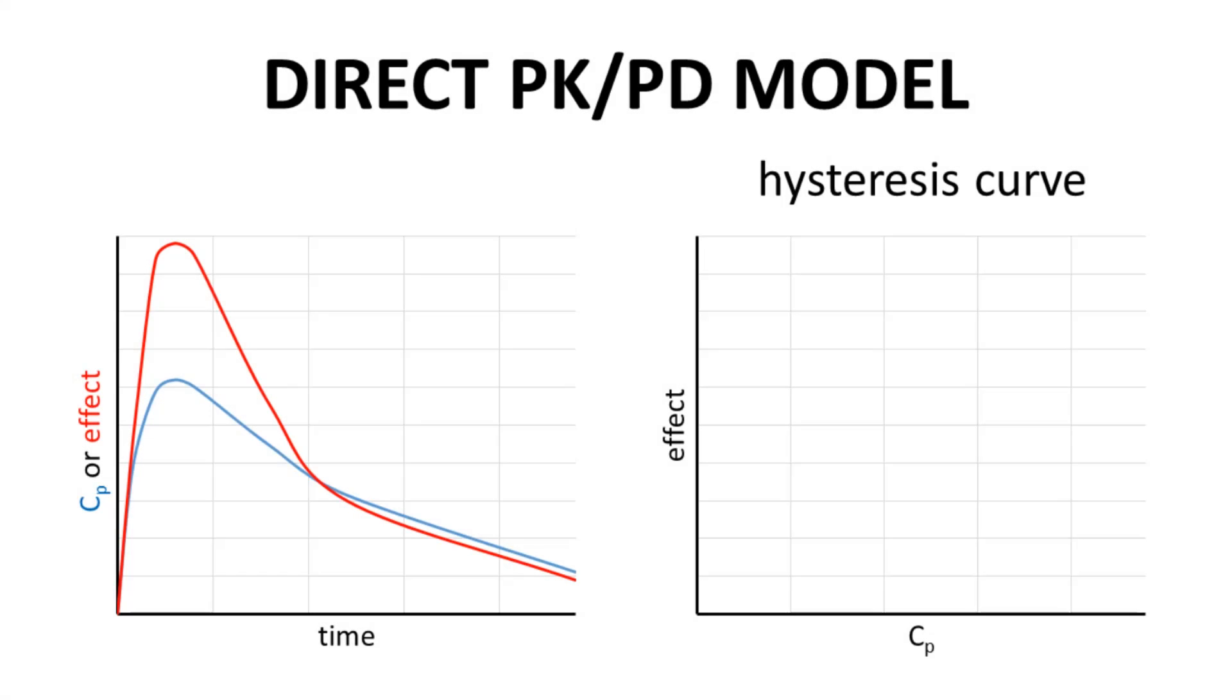To the left is our standard direct model representation. To the right is a set of axes, effect versus CP. This gives us something called a hysteresis curve. Let's try to redraw the left curves onto the right axes.